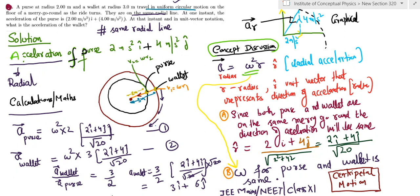You can see on the top right hand side, at the top I have shown 2 and 4 as the components and the radial acceleration as the resultant of these two. Now essentially the acceleration of the purse has been given.